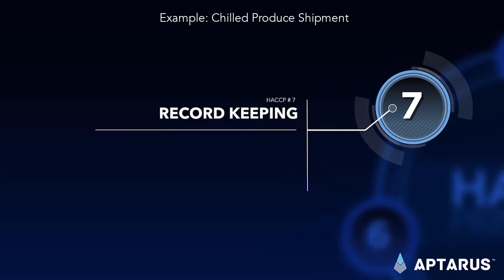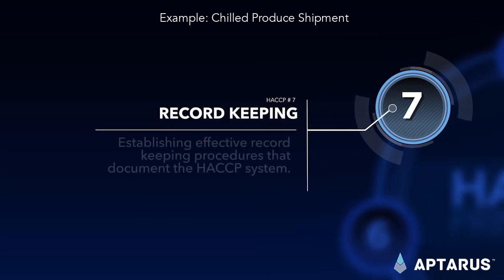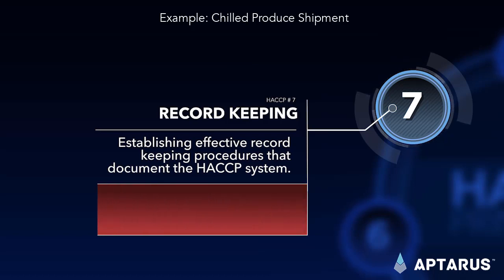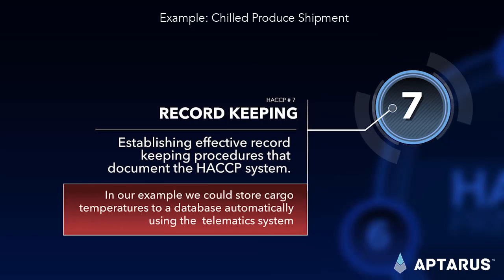Record keeping – establishing effective record keeping procedures that document the HACCP system. In our example, we could store cargo temperatures to a database automatically using the telematic system.